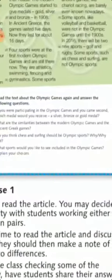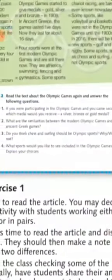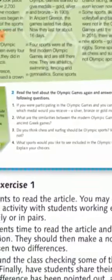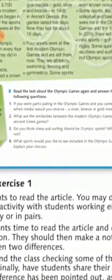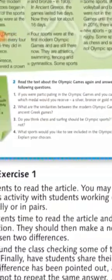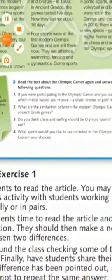Number three: do you think chess and surfing should be Olympic sports? Yes or no — why? You can write your own answer. What sports would you like to see included in the Olympic Games? That question is up to you — you can choose any sport you like that isn't already there. Thank you.